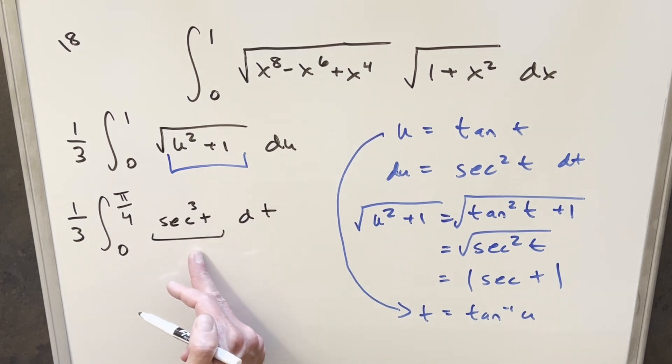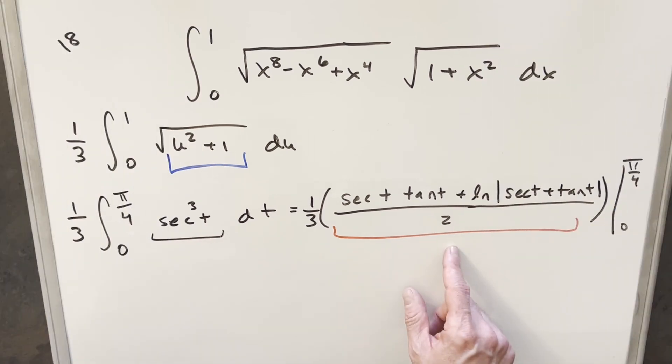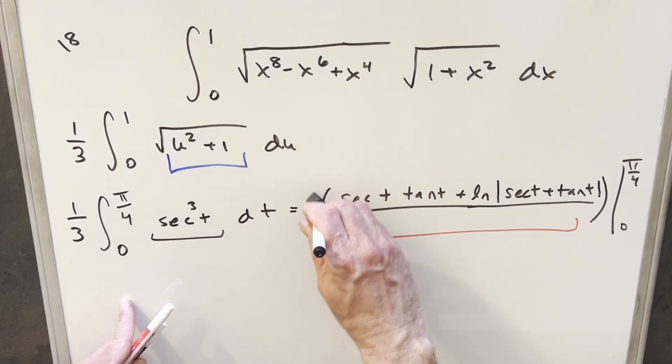But then this here is a really common integral. So let's just use the formula on this for secant cubed t, and then we'll finish it off. Now one thing I can do before we evaluate is we have this 2 in the denominator. Let's just factor that out. We'll just bring that outside, and I can make this here 1 over 6.